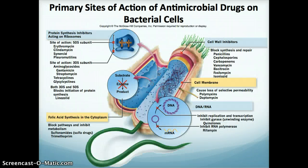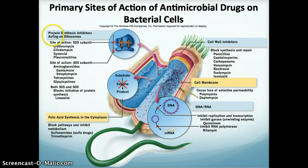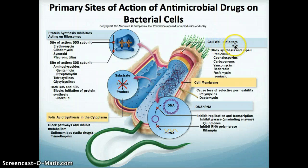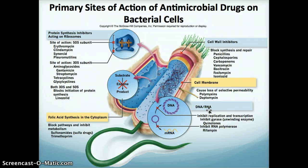This is a diagram from the book and it shows the different sites of action of antimicrobial drugs on bacterial cells. You'll see that some affect protein synthesis at the ribosome, folic acid synthesis occurring in the cytoplasm, cell wall inhibitors, cell membrane, and lastly DNA or RNA. So the nucleic acids — they may block at some point there. That gives a nice view of the different targets.